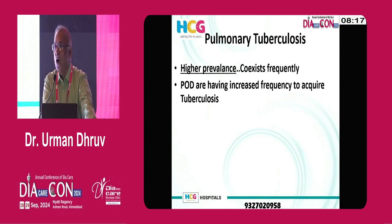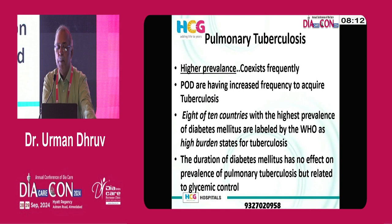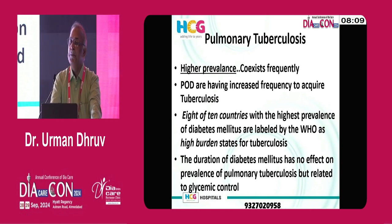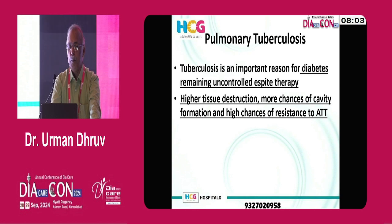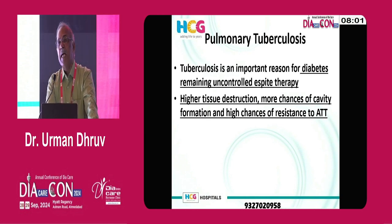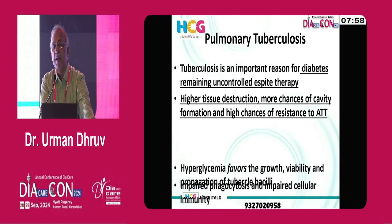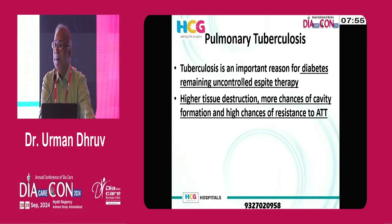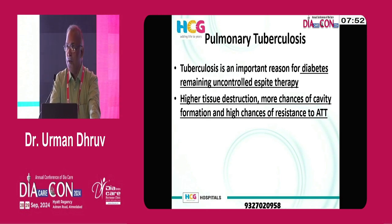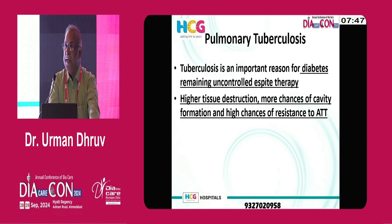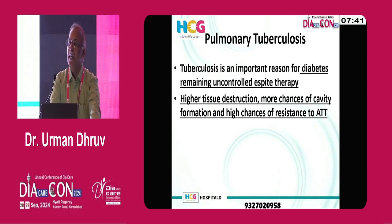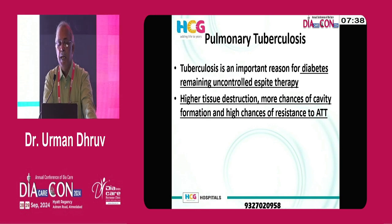Tuberculosis: we know very well there is a higher prevalence in patients with diabetes. About eight out of ten countries with the highest prevalence of diabetes also have the highest prevalence of tuberculosis. When diabetes is uncontrolled, we used to think the patient might have tuberculosis if there is weight loss. With newer modalities of diagnosing tuberculosis, it becomes imperative that a patient with weight loss and uncontrolled diabetes should be investigated for tuberculosis, just as we think about HIV.